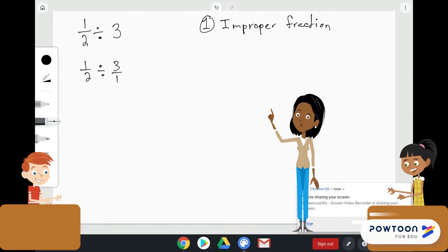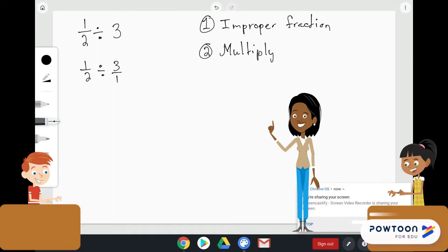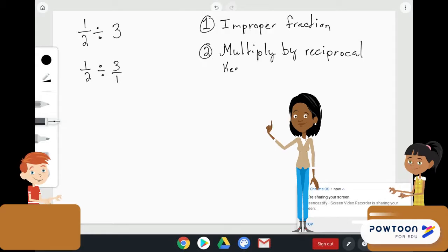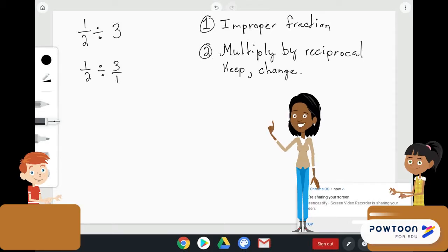The next thing we need to do is to multiply by the reciprocal. Now, some of you may have learned this step as keep, change, flip. Some people call it keep, change, change. But guys, the real way to say it correctly mathematically is multiply by the reciprocal.